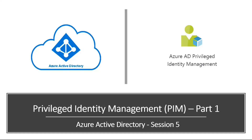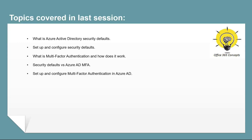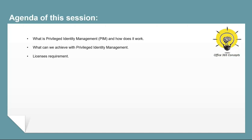Hi guys, I hope you all are doing well and welcome to the next video of this entire series of Azure Active Directory. In the last video, we talked about security defaults and Azure Active Directory multi-factor authentication. We discussed the difference between security defaults and Azure AD MFA and how to set up and configure them. In this particular video, we will be talking about Privileged Identity Management or PIM.